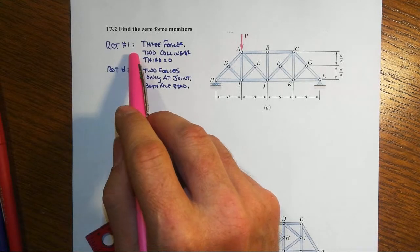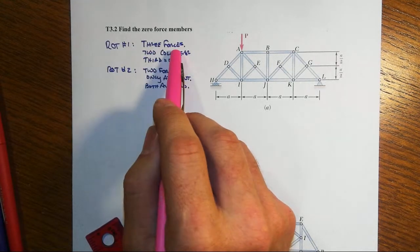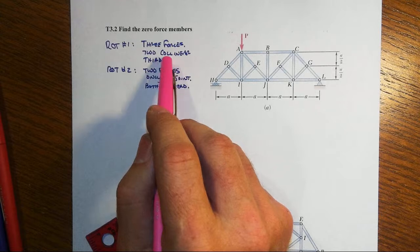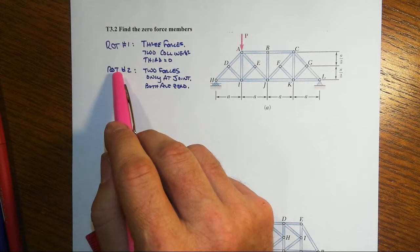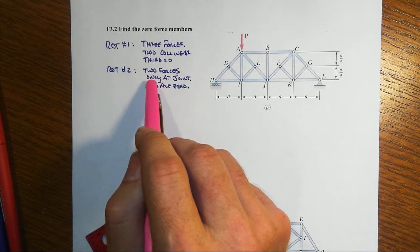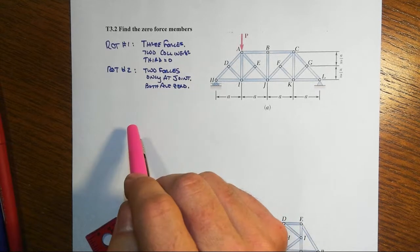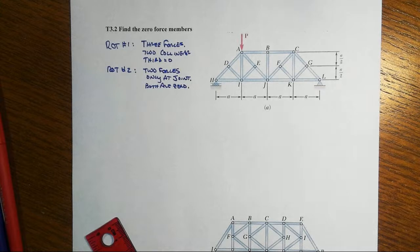Let's go back and remember rule of thumb number one. If we have three forces at the joint, two of them are collinear but the third is not, then the third will be zero. Or the other rule of thumb is if two forces only are at the joint, then both must be zero. So let's take a look at what we've got here.